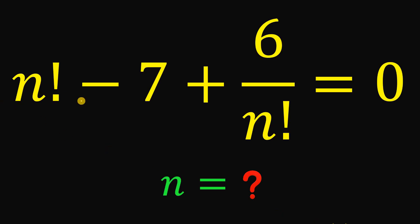Consider this equation: n factorial minus 7 plus 6 over n factorial equals 0. Then the goal is to find the value of n.